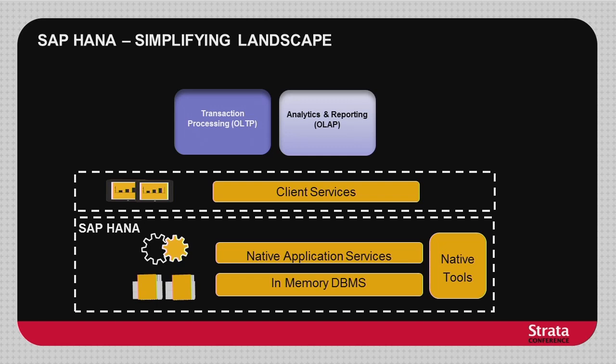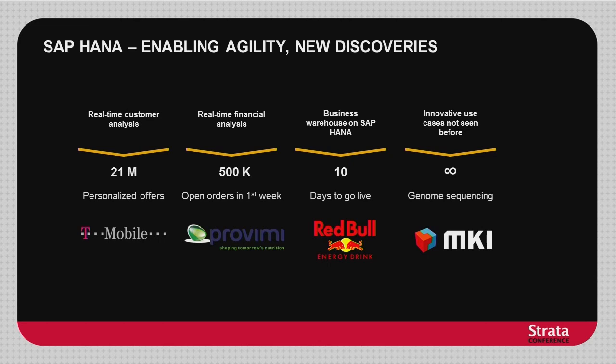Once you achieve that simplicity, it opens up new opportunities and new experiences. For example, with HANA, T-Mobile was able to reach 21 million more subscribers through smartphone upsells within weeks, by cycling through many more real-time campaigns than before. Provimi, a food supplier in Europe, saved 500K within the first week of deploying SAP HANA in working capital and inventory costs. Red Bull went live with a data warehousing project within 10 days of installing HANA. And MKI in Japan was able to do genomics analysis in hours that previously took days or simply did not complete with traditional technologies.